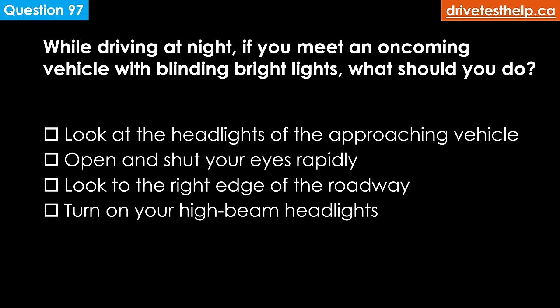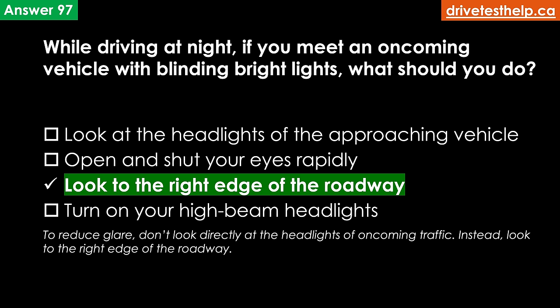While driving at night, if you meet an oncoming vehicle with blinding bright lights, what should you do? Options: look at the headlights of the approaching vehicle; open and shut your eyes rapidly; look to the right edge of the roadway; turn on your high beam headlights. The correct answer is look to the right edge of the roadway. To reduce glare, don't look directly at the headlights of oncoming traffic — instead, look to the right edge of the roadway. To cut glare from the rear, adjust your rearview mirror or use a day-night mirror, and reduce your speed until your eyes have recovered.